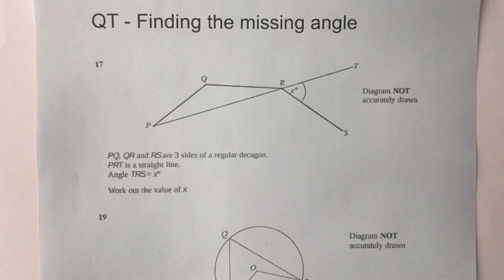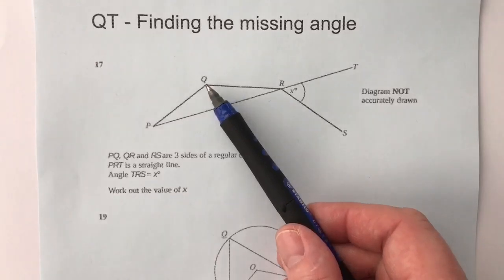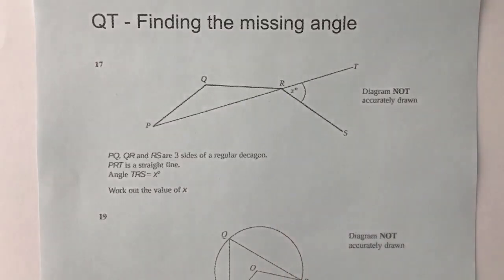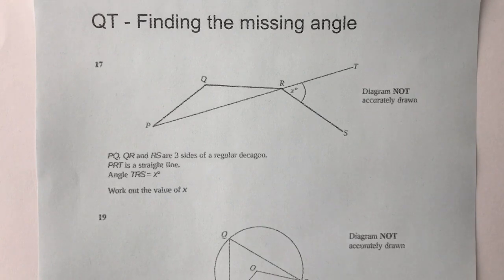with external and internal angles. Okay, but what it's saying to us initially is that PQ, QR and RS are three sides of a regular decagon, which is a ten-sided shape.